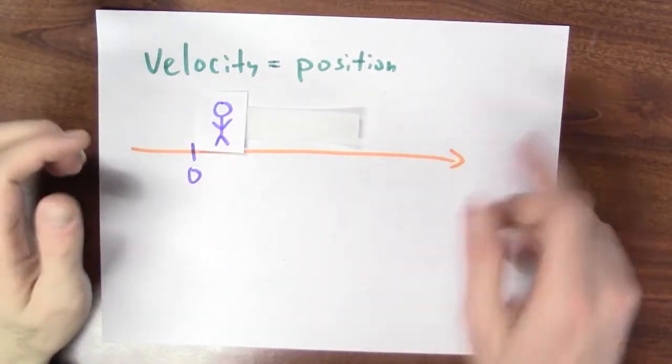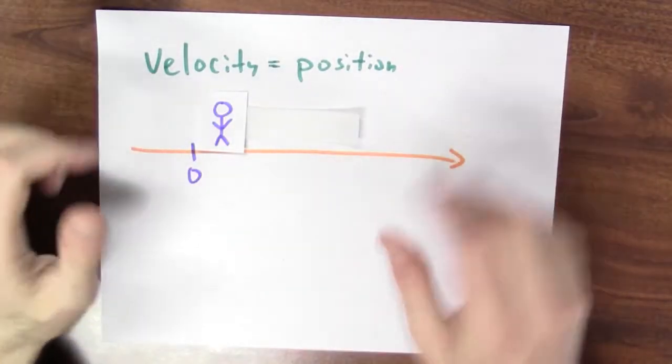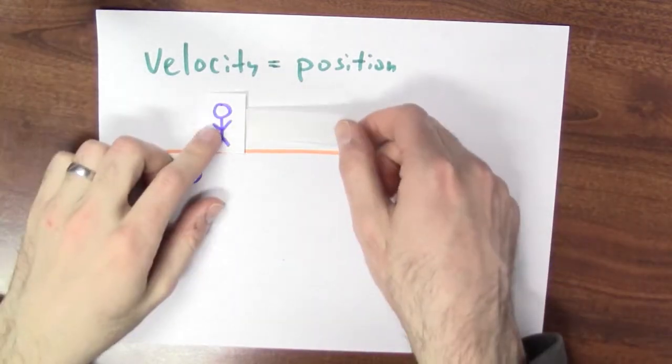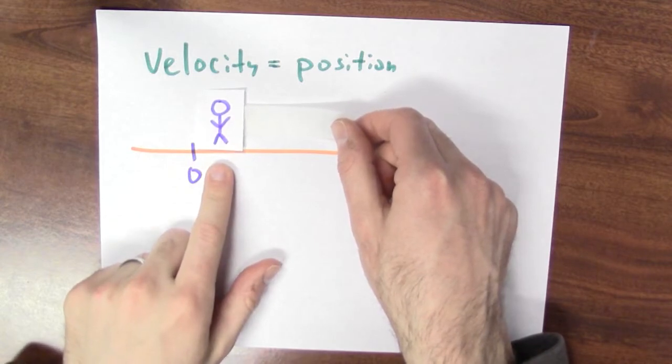To get some intuition for this, let's first imagine a very different situation. Let's suppose that velocity is equal to position. And I can imagine that I'm starting here and I start moving.